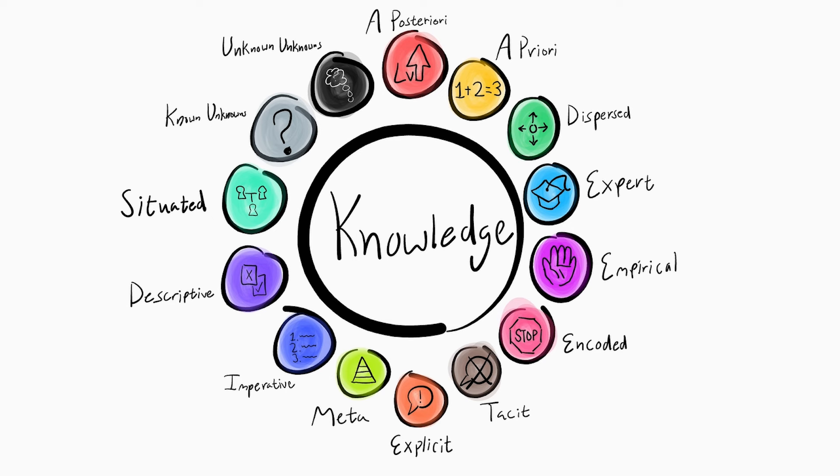Encoded knowledge. Encoded knowledge has to do with knowledge that is stored and is decoded. The most common type is written language. So when we write words down and people can read those words, that's encoded knowledge. You might also see this in symbols, such as a stop sign or a stoplight.